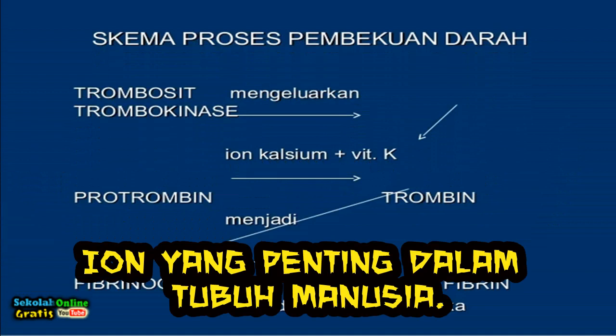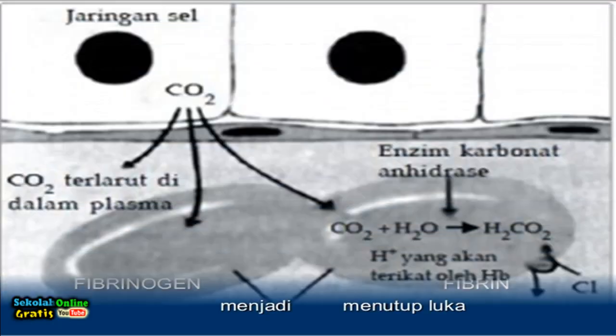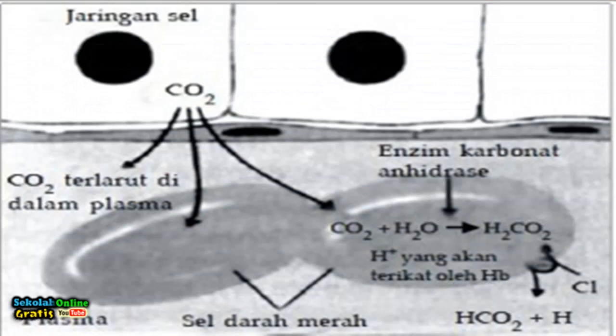Ions are important in the human body. For example calcium ions Ca+ in the human circulatory system. Calcium ions can help clot blood when there is an injury, transport oxygen gas O2 and carbon dioxide CO2 in the body. Carbon dioxide in body tissues is channeled to the lungs in three ways.